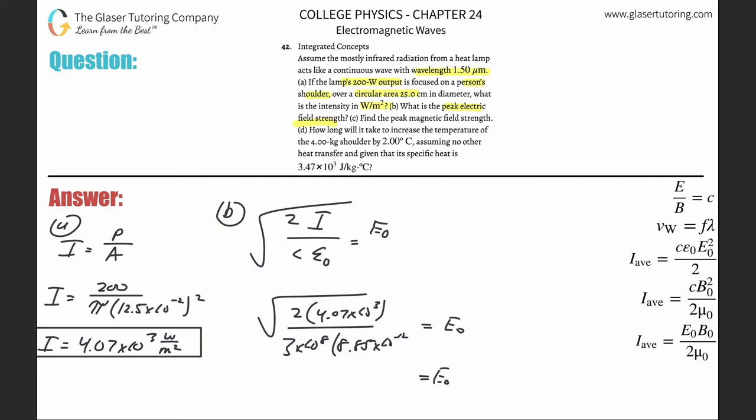Square root of 2 times the exact answer, divided by 3 times 10 to the 8 times 8.85 times 10 to the minus 12th, and we get an answer of about 1.75 times 10 to the third, and that's in volts per meter.